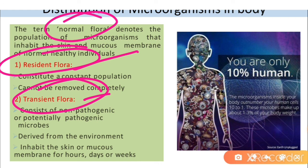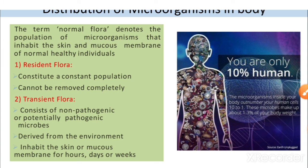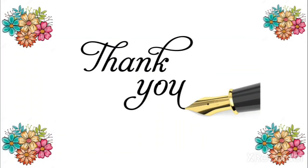Sometimes the microorganisms present in our body act as symbionts — this relationship is sometimes called parasitism. However, due to environmental changes in the body, or changes in pH or temperature, these microorganisms can become infectious agents or pathogens, causing disease. We have to maintain the right balance in the relationship between microorganisms and our body.